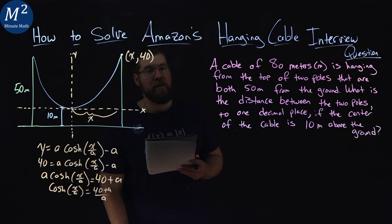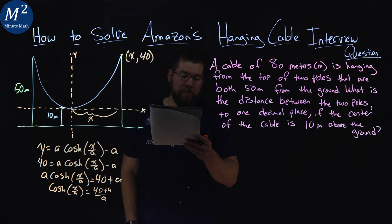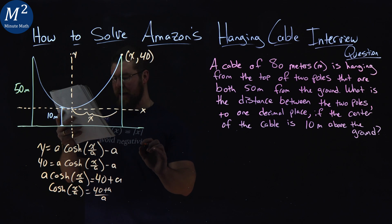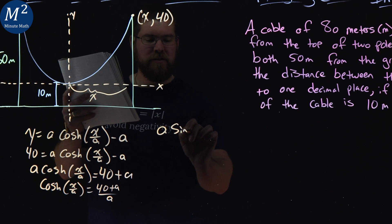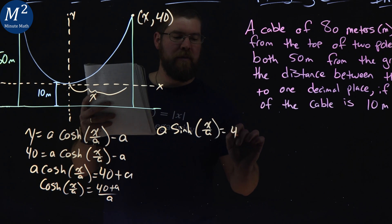Now this by itself doesn't really help us. We're going to use a second equation here, the half of cable length equation. And this equation, we can apply it here, is a sinh of x over a is equal to that 40 again.